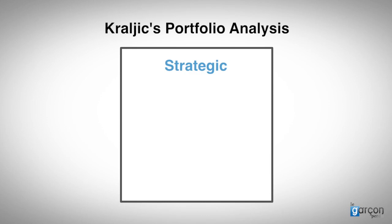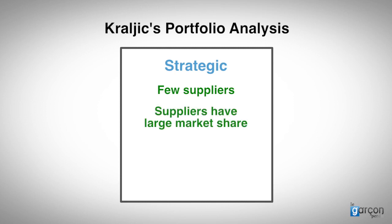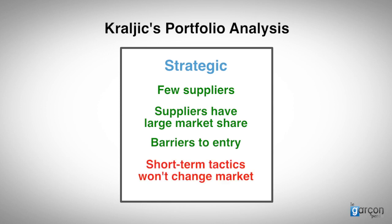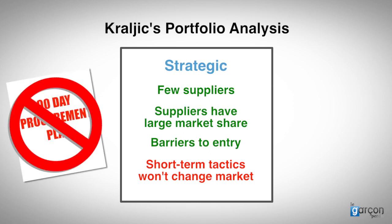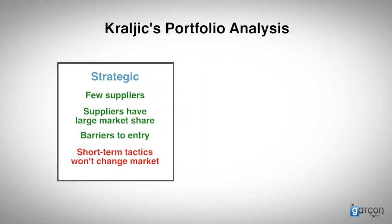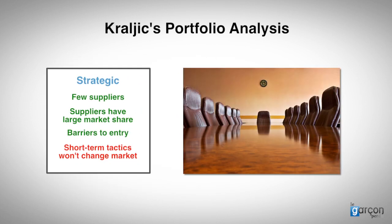The typical character of the supply market that makes it complex is that there are few suppliers, perhaps only one. The suppliers have large market share. There are barriers to entry that restrict market entry to competitors. The point is that short-term tactics are not going to change the market. This is not the place for 90-day procurement plans. This is why Kralich wanted procurement on the agenda of the senior leadership team, so that the buying organisation could adopt longer-term strategies to try and change the market dynamics in favour of the buyer.